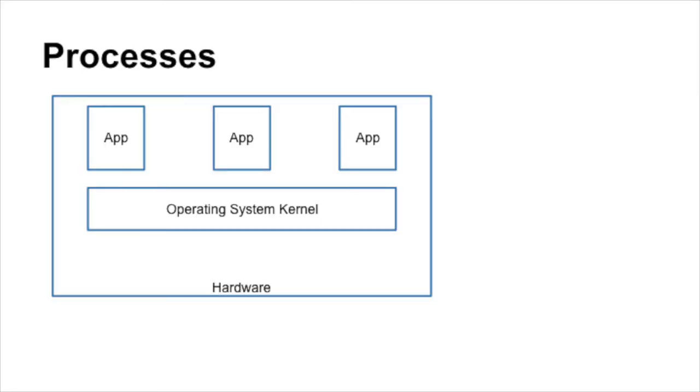The operating system kernel is this higher-privileged piece of code that intermediates and enables lower-permissioned individual applications. It acts as a referee that manages resources between them — applications can't escape and manage their own resources — and also provides a nice illusion that makes it easier to write individual apps or processes. As we start thinking about the interface between the application and the kernel, which is the system call interface — the interface for how I make a call down into the kernel — we have a couple of questions to focus on.